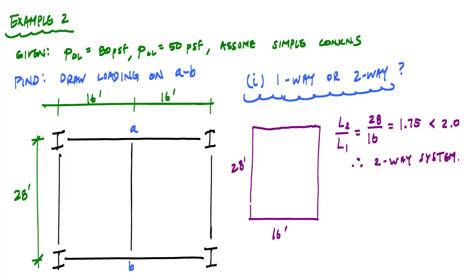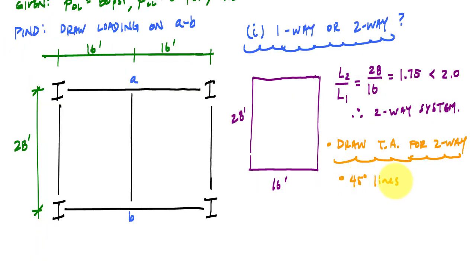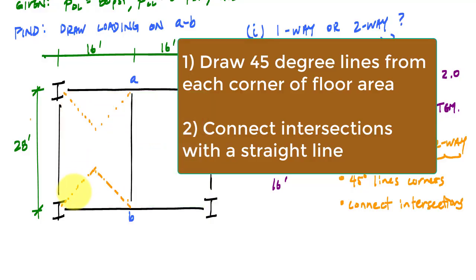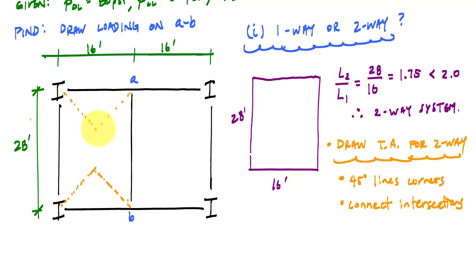So how do I divide up the areas for a two-way system? That usually involves drawing 45 degree lines from the corners and then connecting the intersection. So what do I mean by that? So here I'll take any area surrounded by beams, and I'm gonna draw a 45 degree line. So I drew 45 degree lines from each corner until they intersected.